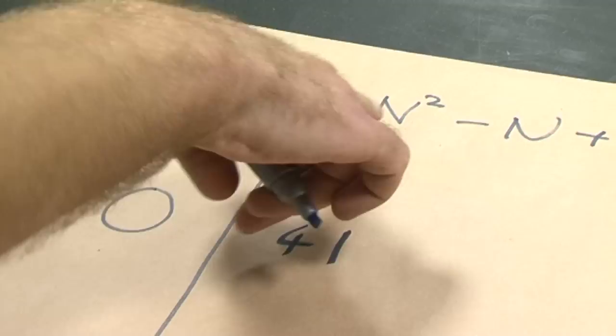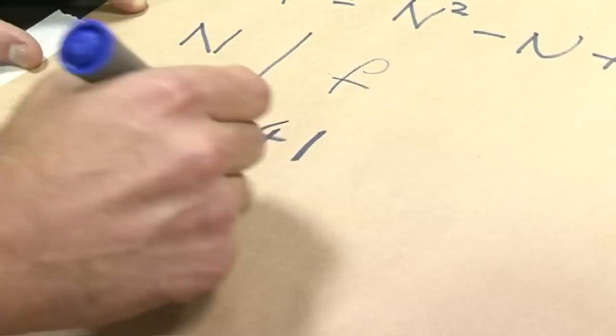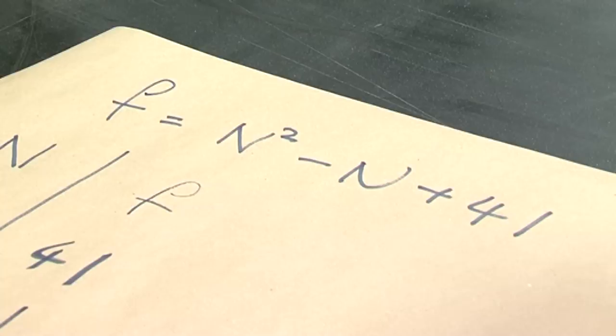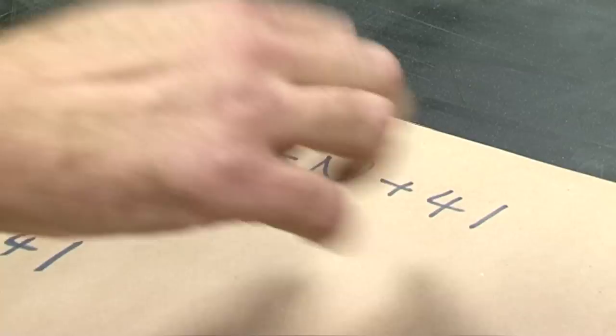I put in a value of 1. I have 1 squared, which is 1, minus 1 plus 41. So that's simply 41. If I put in a value of 2, I get 2 squared. That's 2 times 2 is 4, minus 2 plus 41, that's 43. And so on.